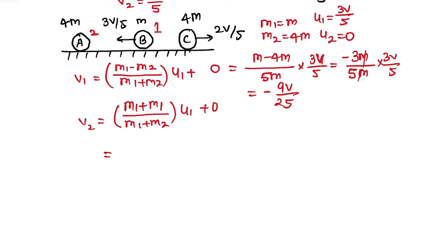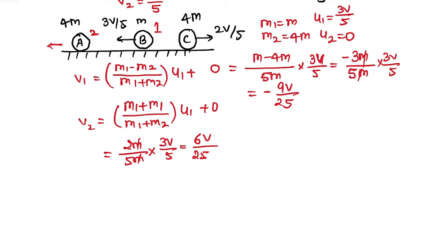For V2 (ball A): 2M/(M + 4M) times 3V/5 = 2M/5M times 3V/5. The M's cancel, giving 6V/25. This is positive, meaning A moves in the same direction as B was originally going.